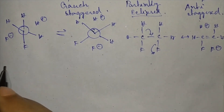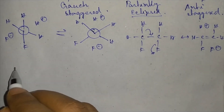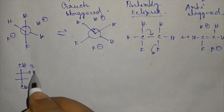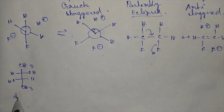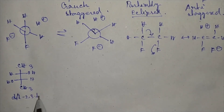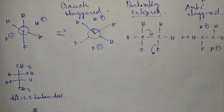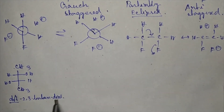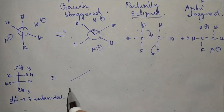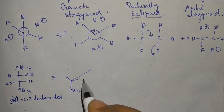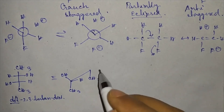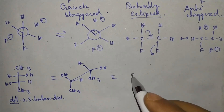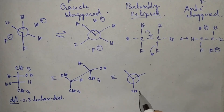Now we will go to DL-2,3-butanediol. It is CH3-CH(OH)-CH(OH)-CH3. It is DL and not meso — in the case of meso, the OH groups would be on the same side. The Sawhorse projection and Newman projection for this compound can be drawn as shown.